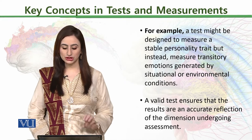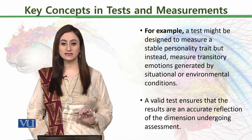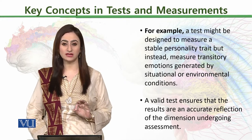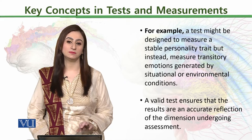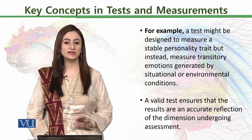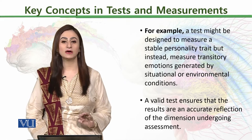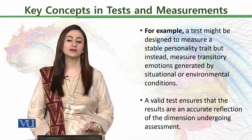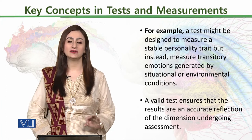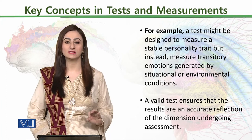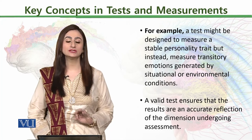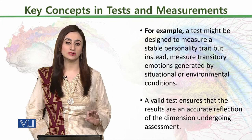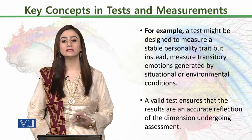A valid test ensures that results are an accurate reflection of the dimension undergoing assessment. For instance, if our scale is measuring a specific trait — aggression — it should only measure aggression, not abuse.